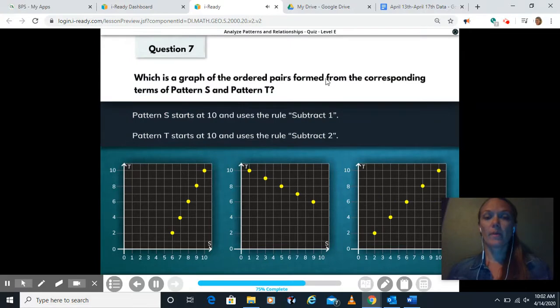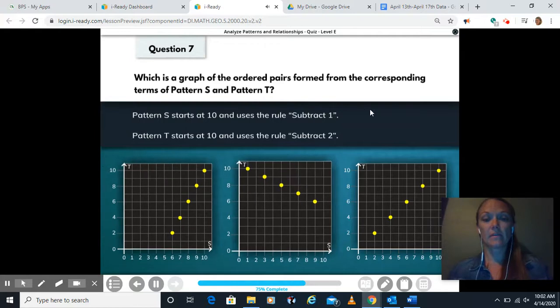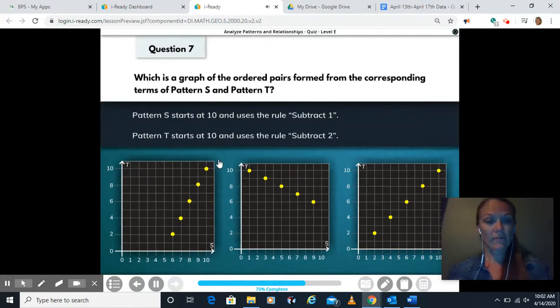Which is a graph of the ordered pairs formed from the corresponding terms of pattern S and pattern T? Pattern S starts at ten and uses the rule subtract one. Pattern T starts at ten and uses the rule subtract two. So if I start at ten, and I'm subtracting one, then my next dot should be at nine. So from ten right here, my next dot would be at nine. Yes. And we're also using the rule subtract two. So I'm starting at ten. If I subtract two, then I should be at eight. Let's see if that continues to work on this one.